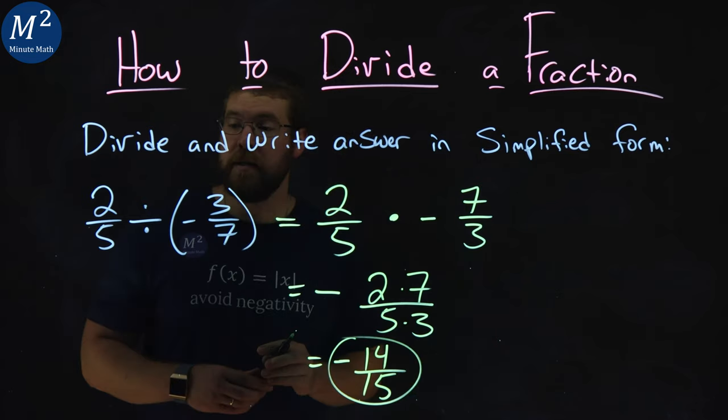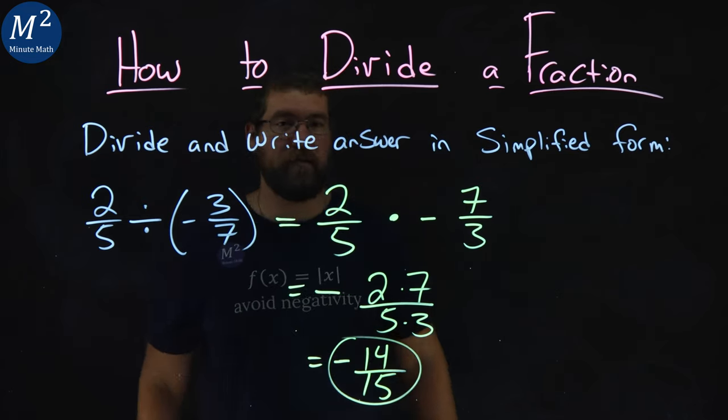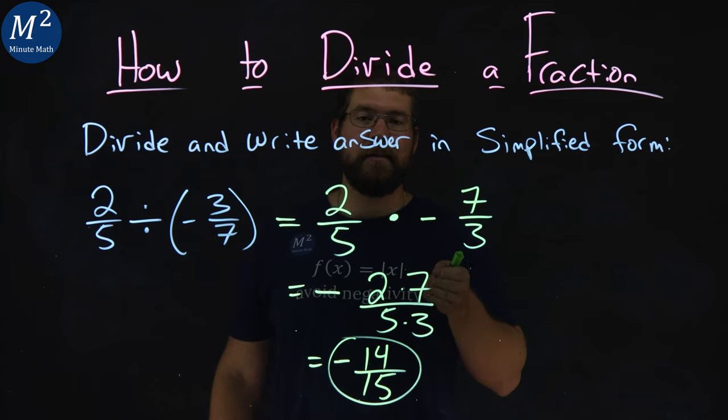And so, when it's all said and done, two fifths divided by negative three sevenths equals negative fourteen over fifteen.